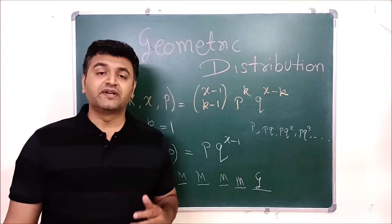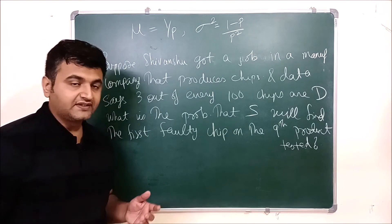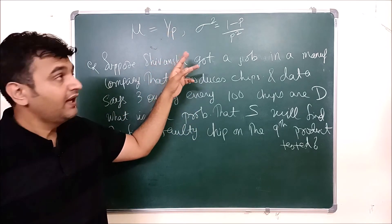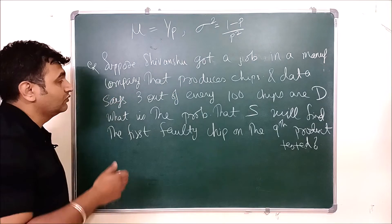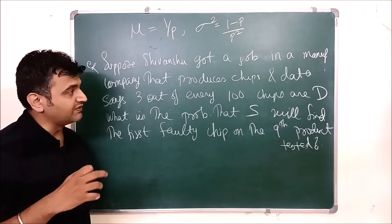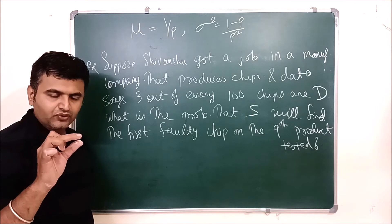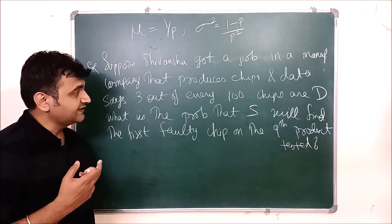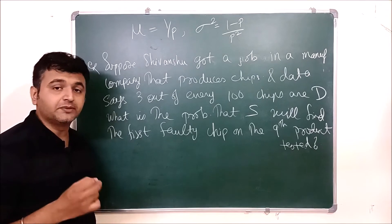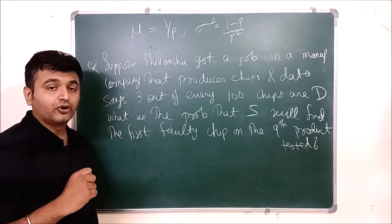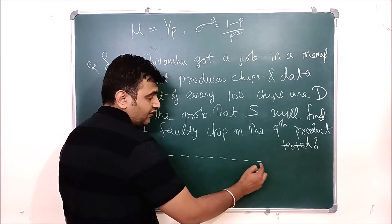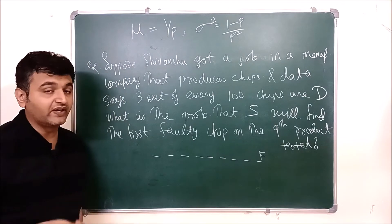Similarly one can have a cumulative distribution function, which sums up the PMF values - that was covered in an earlier lecture. The mean is 1/p (since k=1 in the negative binomial mean k/p), and variance is (1-p)/p². Now, suppose Shivanshu gets a job in a manufacturing company producing chips - like Intel - where three out of every hundred chips are defective. What is the probability that Shivanshu will find the first faulty chip on the ninth product he tests?